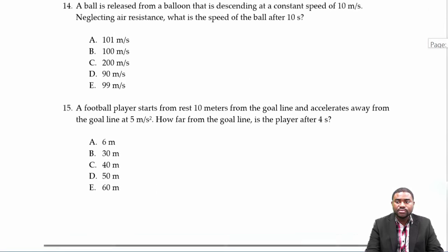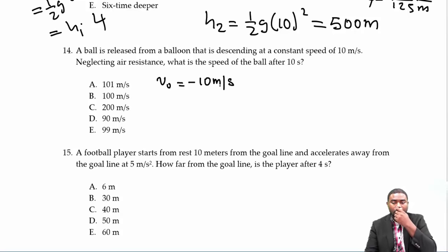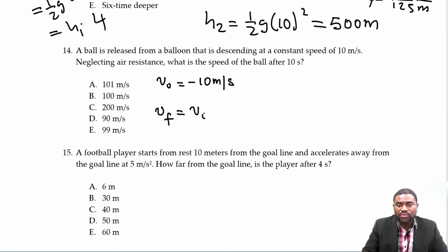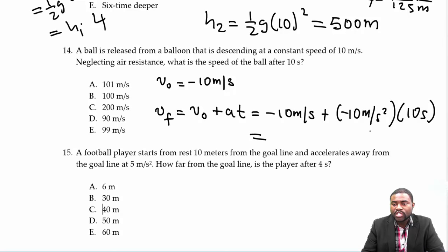A ball is released from a balloon that is descending, so V₀ is negative 10 m/s. What is the speed of the ball after 10 seconds? V_final equals V_initial plus at equals negative 10 m/s plus negative 10 m/s² times 10 s equals negative 110 m/s. Since that answer isn't among the options, a point is added to everyone.